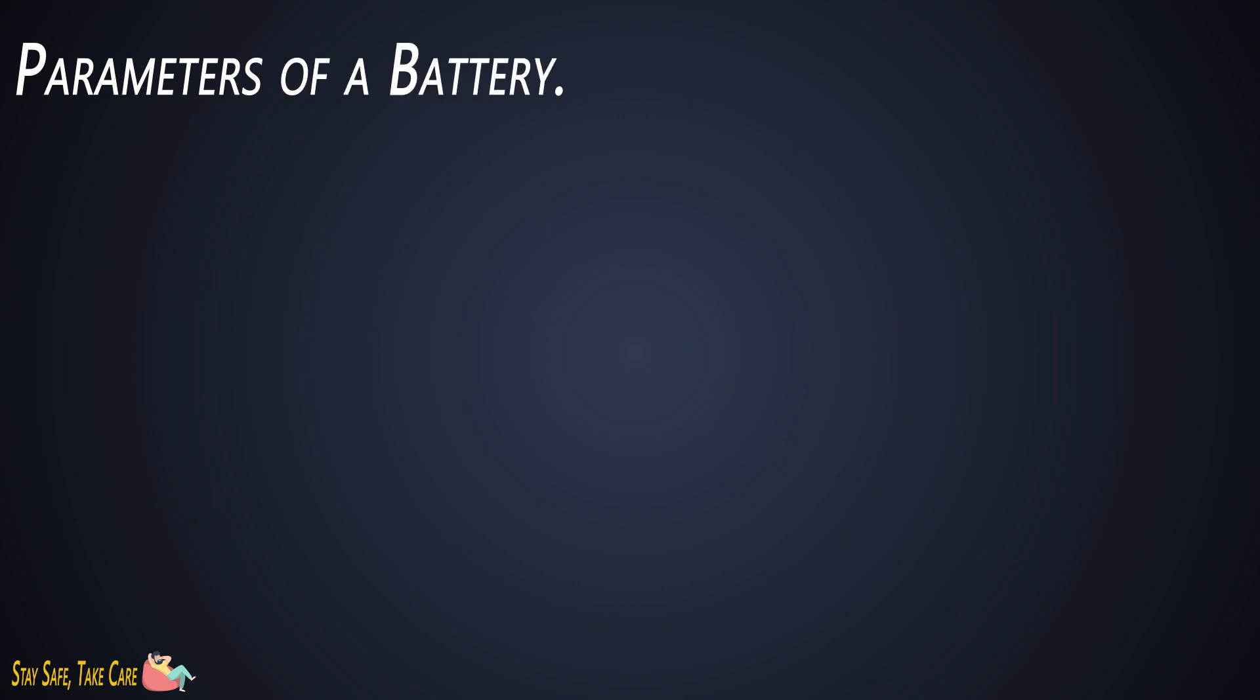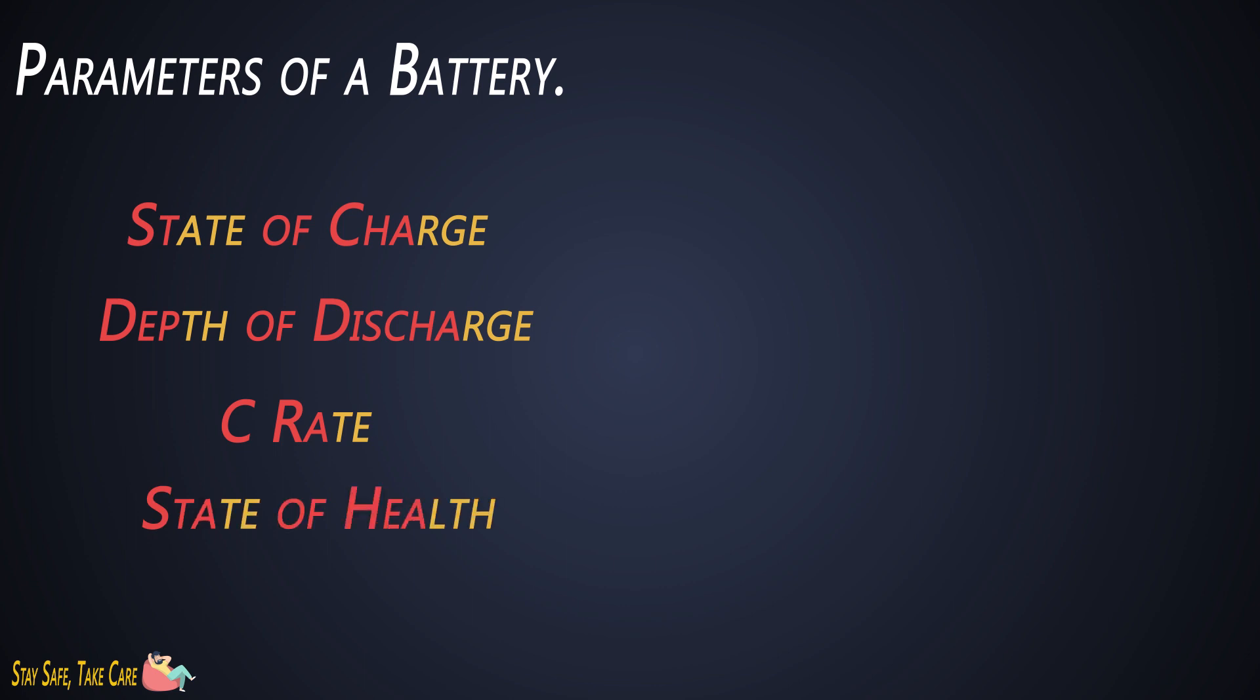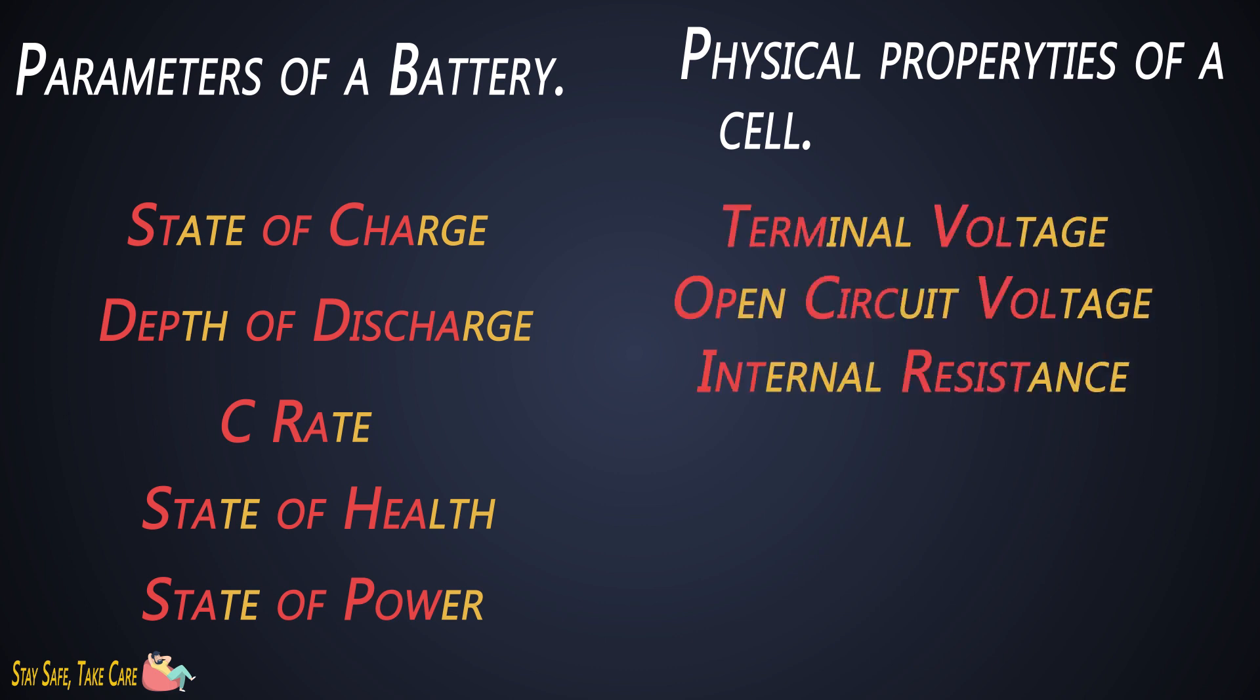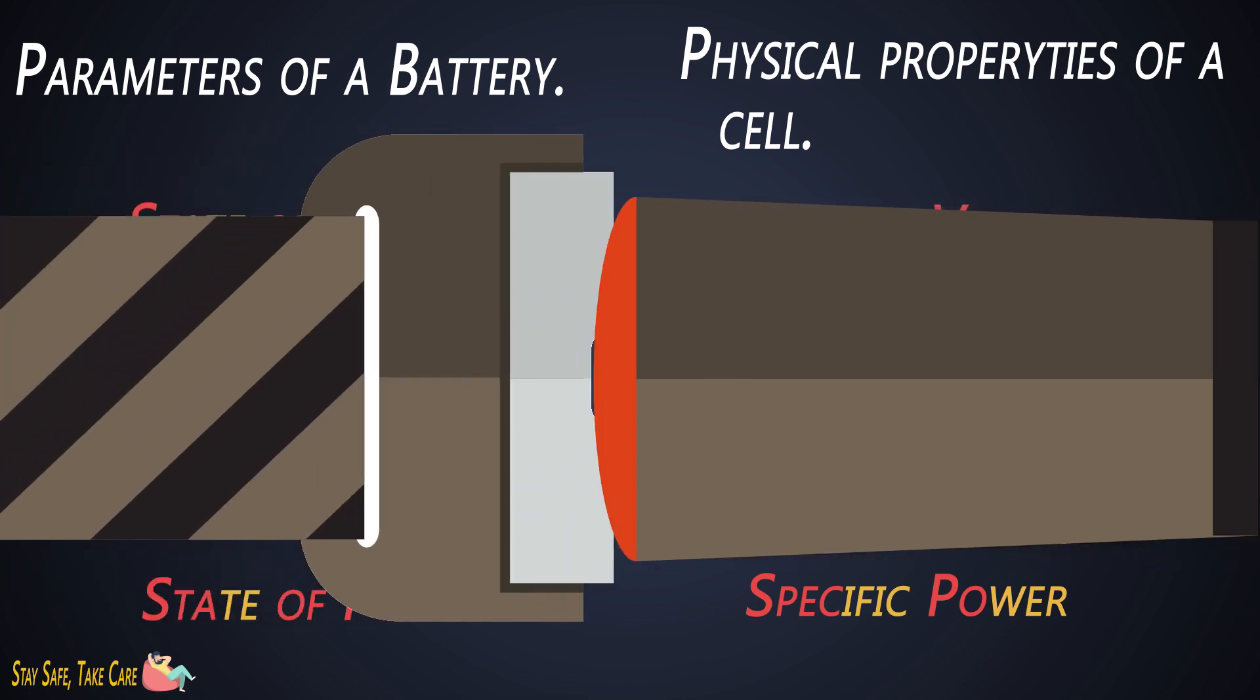Which are state of charge, depth of discharge, C-rate, state of health, state of power, etc. We'll also see the physical properties of a cell such as terminal voltage, open circuit voltage, internal resistance, life cycle, specific energy, specific power, and so on. So buckle up guys, let's go for a ride.